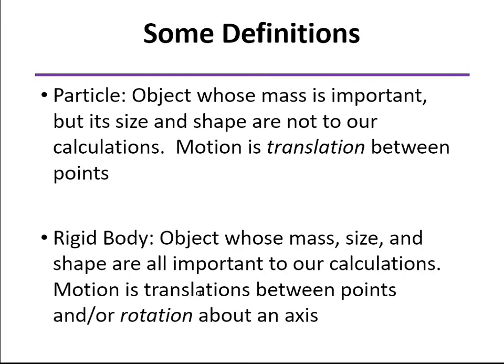A rigid body, on the other hand, which we'll look at later, can translate as well as rotate. And so its size and shape are going to be important as well. But in the beginning, we're only looking at particles.